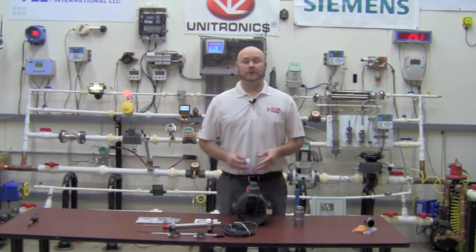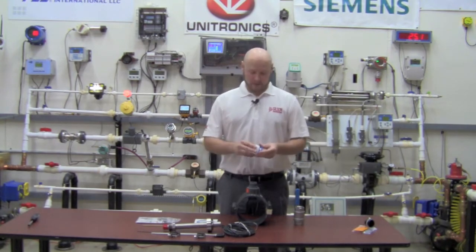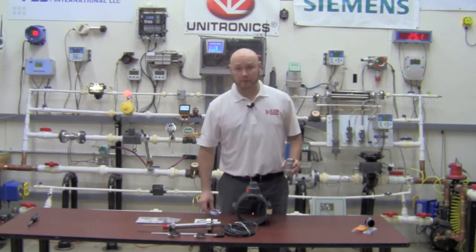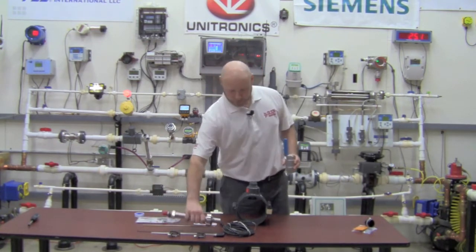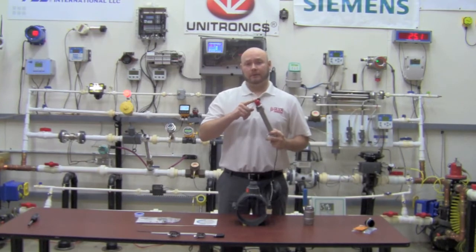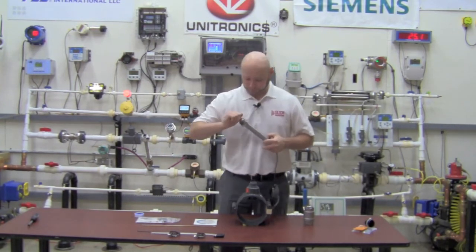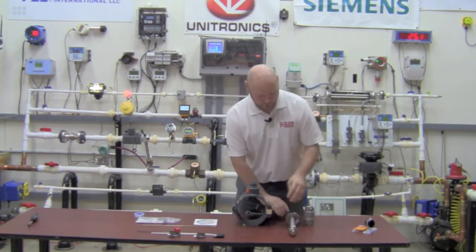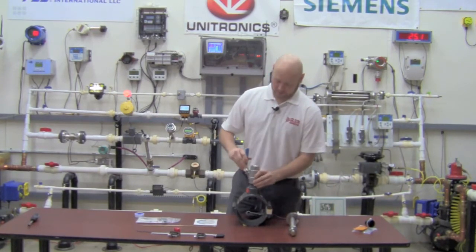Second thing you're going to do is utilize some Teflon tape, which we're going to skip that portion for the purpose of this video. We are going to remove the protective cap at the tip of the 2552. Set this aside for half a moment here. I'm going to thread on the ball valve.